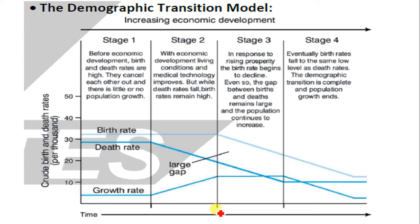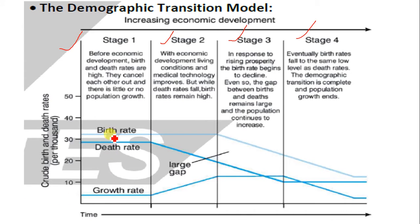Let's quickly look at the demographic transition model before we dive into the population pyramid. The demographic transition model shows the different stages of different countries around the world in terms of their population growth. It includes birth rate, death rate, and population growth. In stage one, birth rate is high, death rate is high, and the population growth rate is low — because approximately the number of people born and the number that die are quite similar, so the population does not increase. Birth and death rates are high, they cancel each other out, and there is little or no population growth.